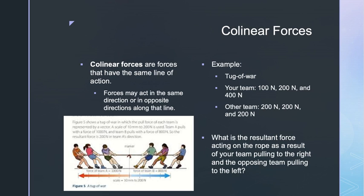Collinear forces have the same line of action. Even though they share the same line of action, they may not be acting in the same direction — similar to a tug-of-war. In this example, your team is pulling to the right with 100 Newtons, 200 Newtons, and 400 Newtons of force. To determine the total force your team is pulling, we add all the force values together along the same line of action: 100 + 200 + 400 = 700 Newtons.